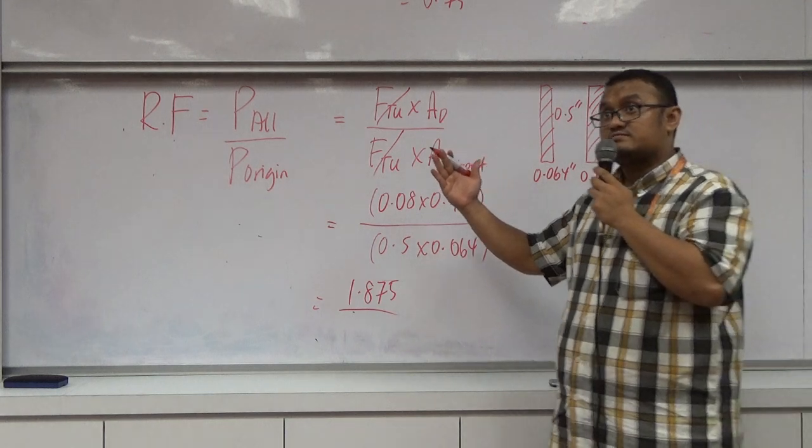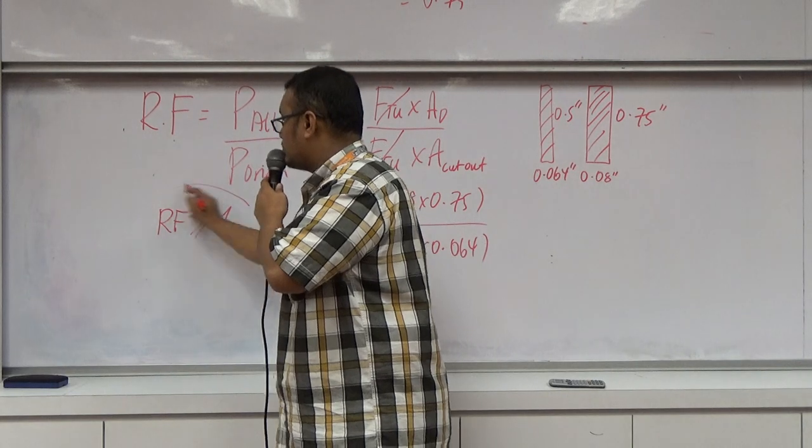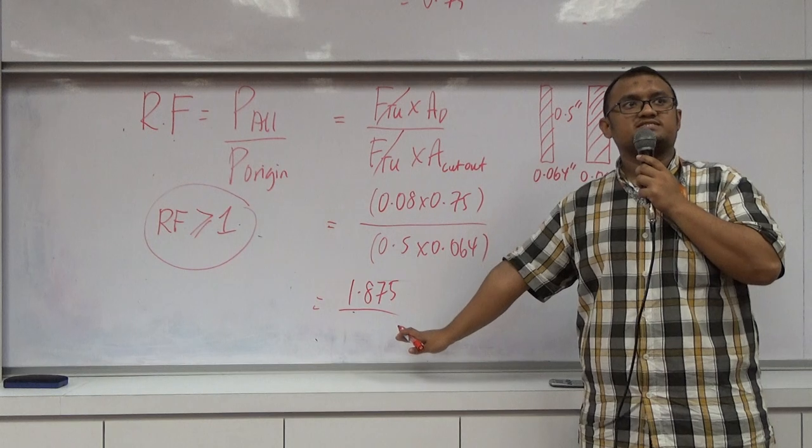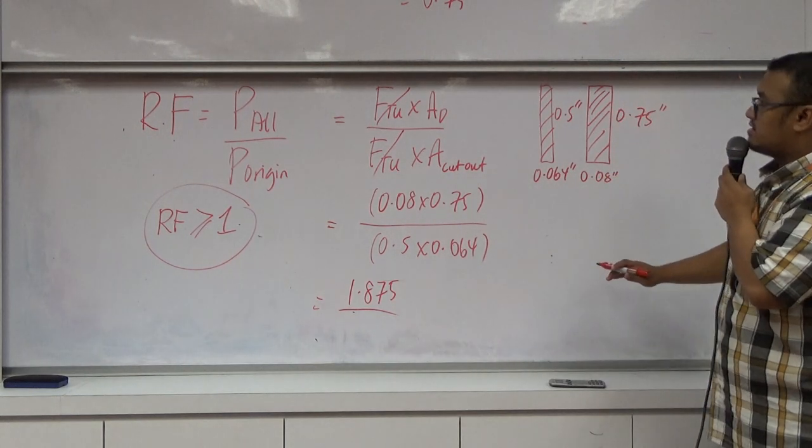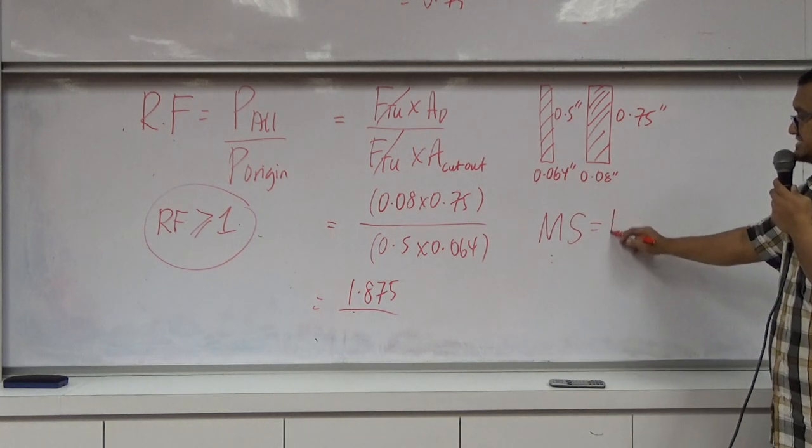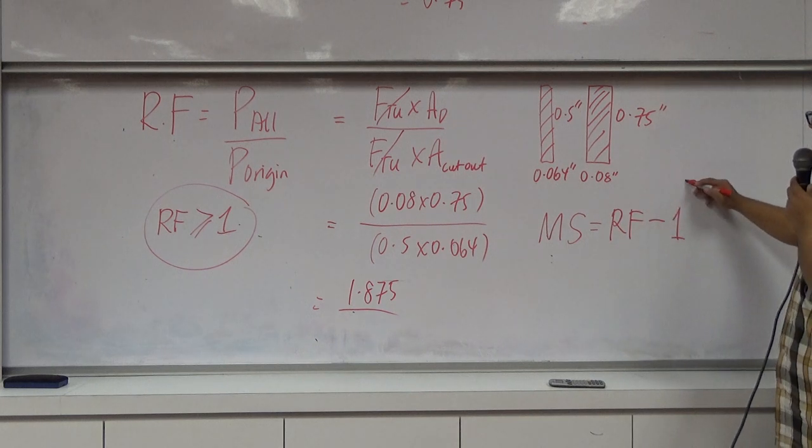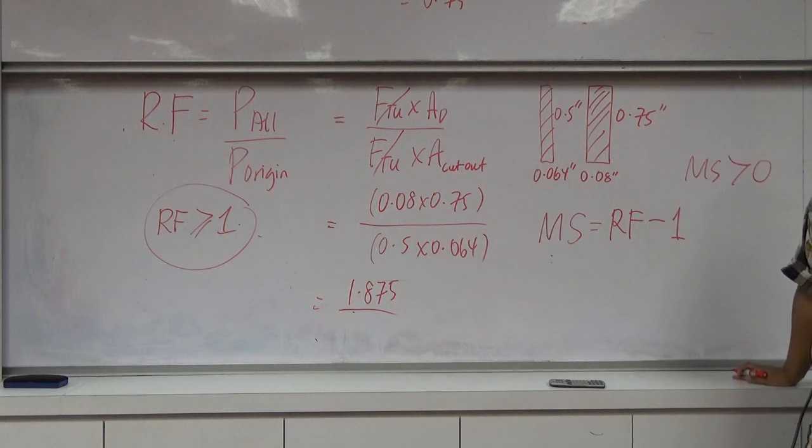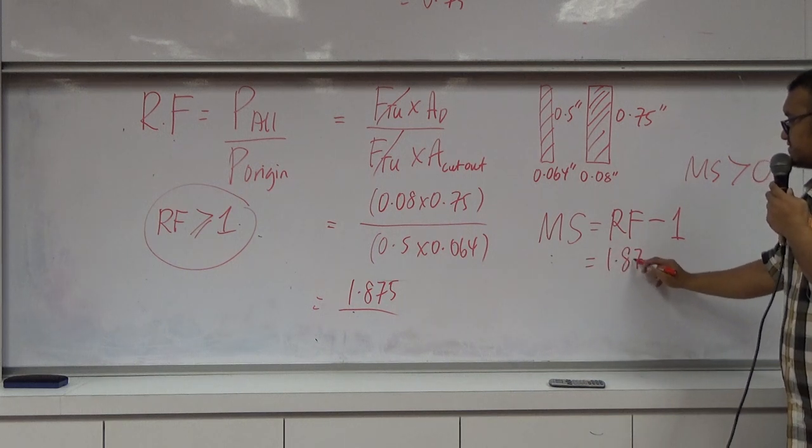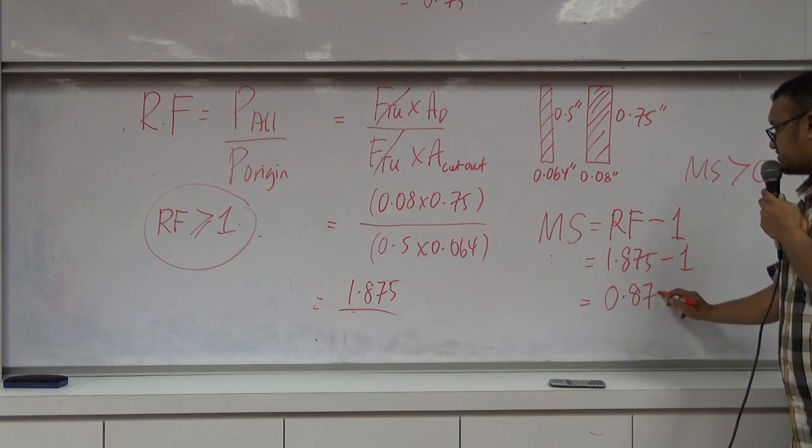Reserve factor must be greater or equal than 1, so we achieve already. 1.875. What about margin of safety? Margin of safety is reserve factor minus 1, and the requirement for margin of safety must be greater than 0. So 1.875 minus 1, you will get 0.875.